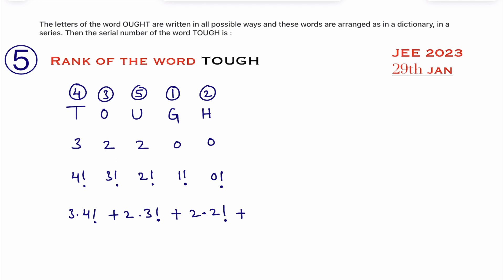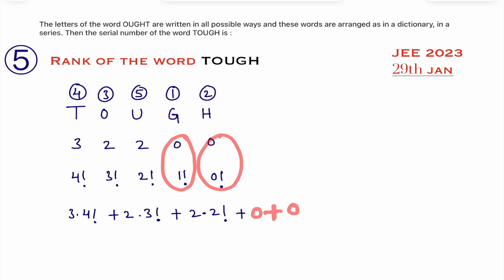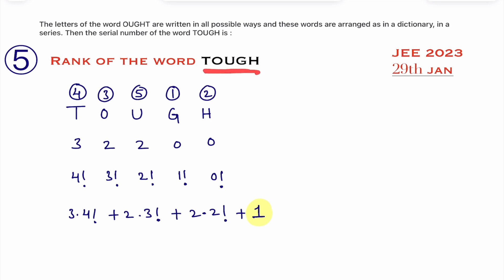So we write: 3 × 4! + 2 × 3! + 2 × 2! + 0 × 1! which is zero, plus 0 × 0! which is also zero. No need to write those zero terms. And since we are finding the rank of the word, at the end you write plus 1. That extra 1 is a must.